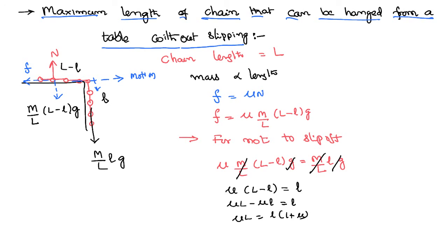Rearranging, the portion of the chain that can be hung is: l = μ/(1 + μ) × L. This is how we solve the problem. For example, if the coefficient of friction is given as 0.5, we can directly substitute into this formula to calculate the maximum hanging length.